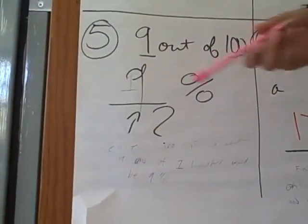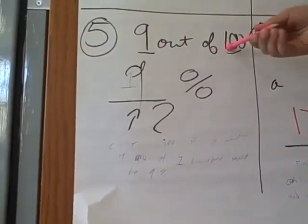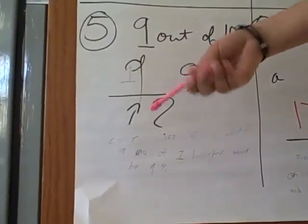It would be the same if you did 10 out of 100 — it would be 10%. And 8 out of 100 would be 8%.